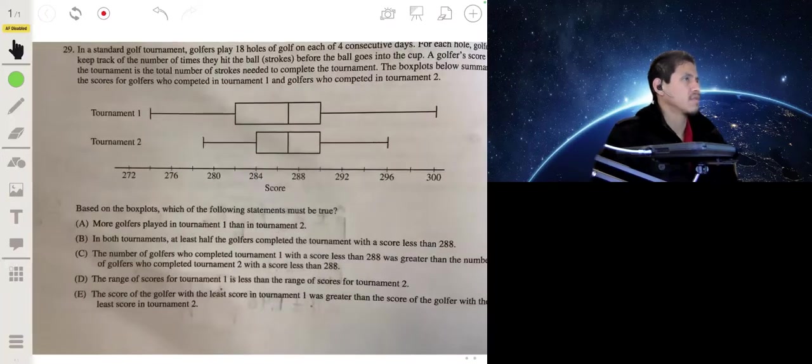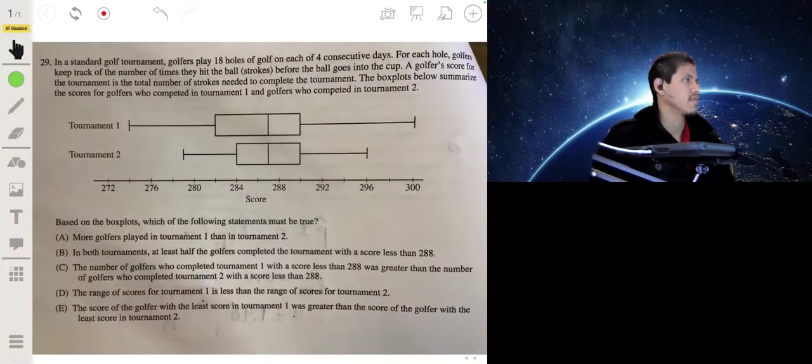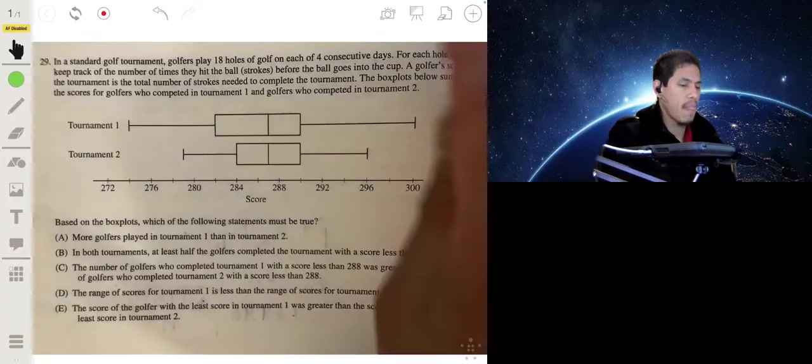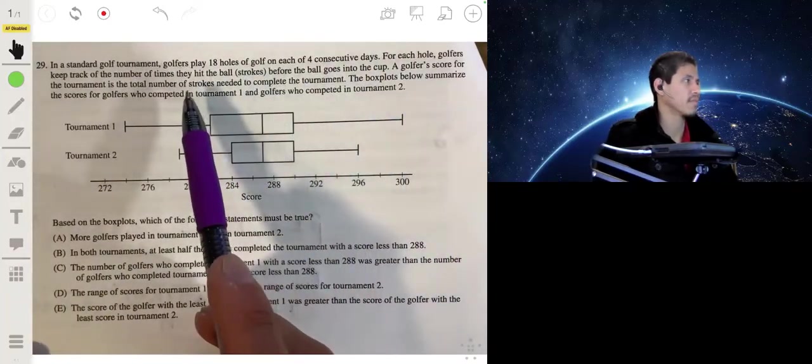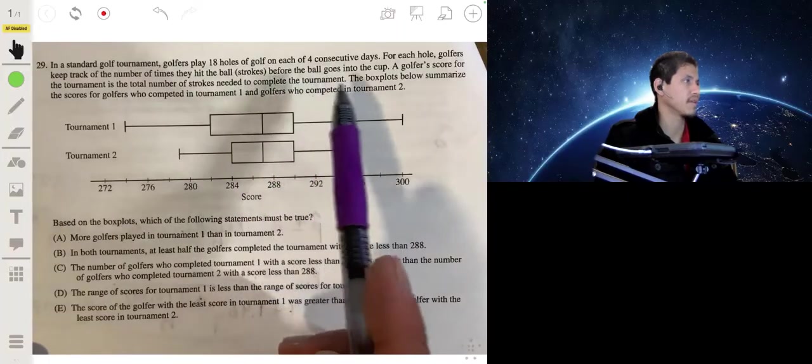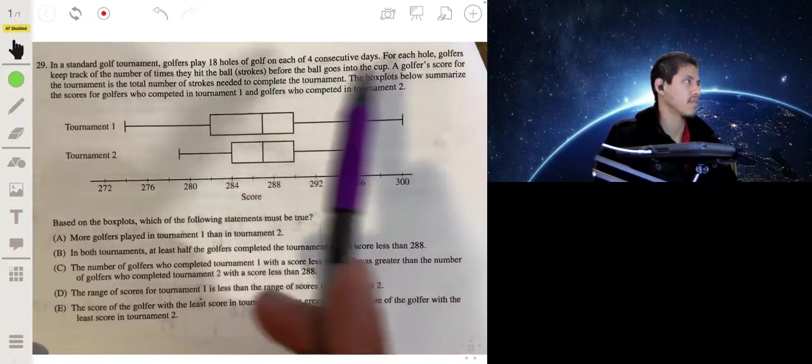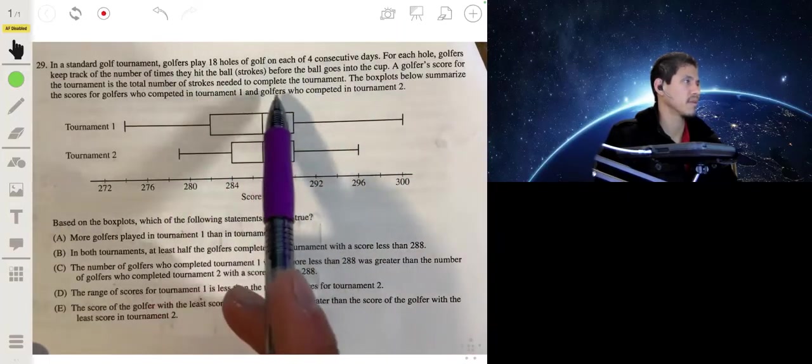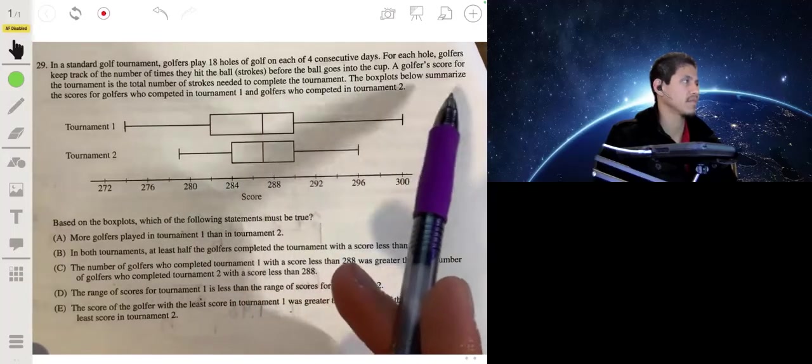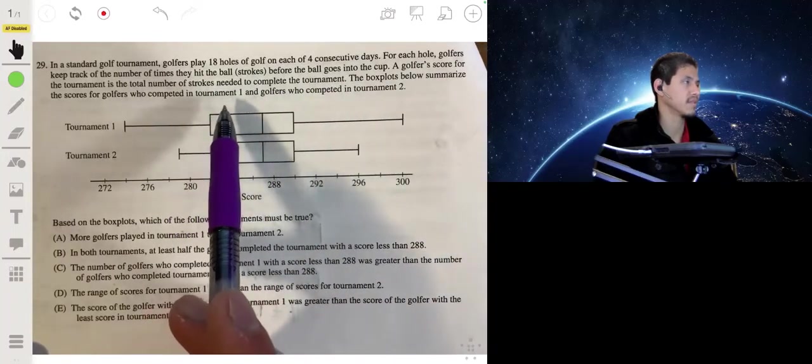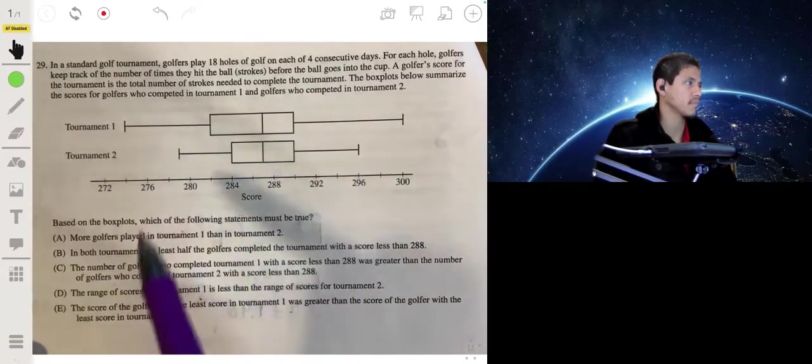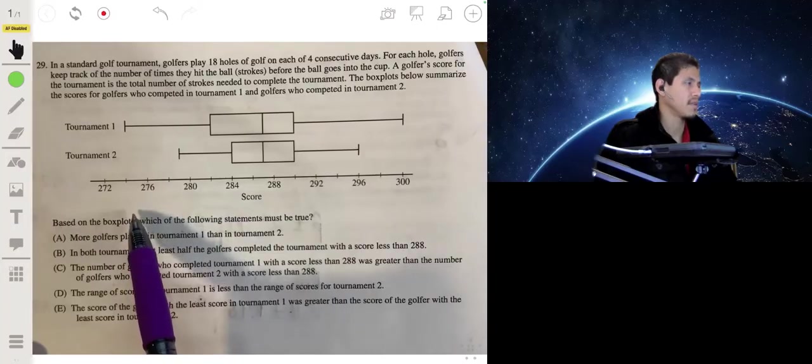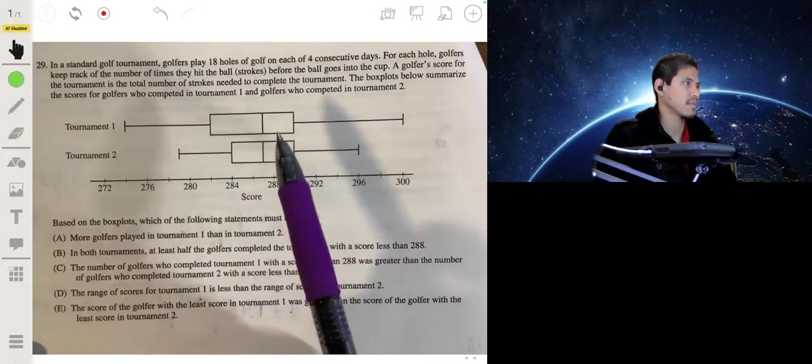All right, in a standard golf tournament, golfers play 18 holes of golf on each of four consecutive days. For each hole, golfers keep track of the number of times they hit the ball, strokes before the ball goes into the cup. The golfer's score for the tournament is the total number of strokes needed to complete the tournament. The box plots summarize the scores for golfers who competed in tournament one and golfers who competed in tournament two. Which of these statements are true based on these box plots? More golfers played in tournament one than tournament two.